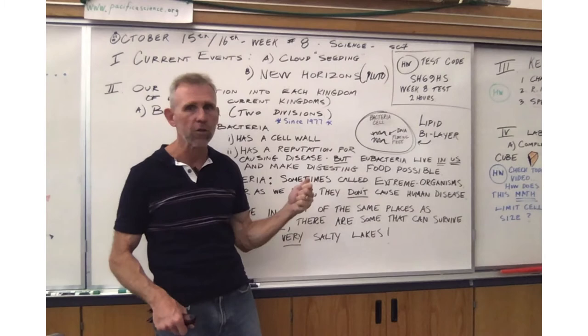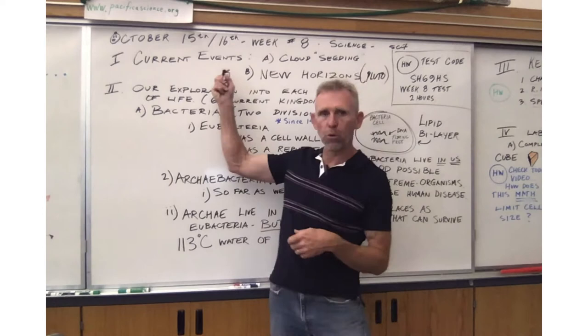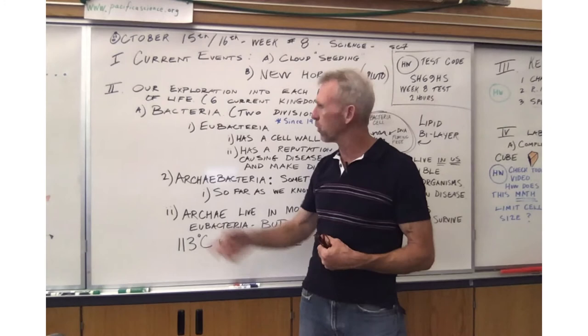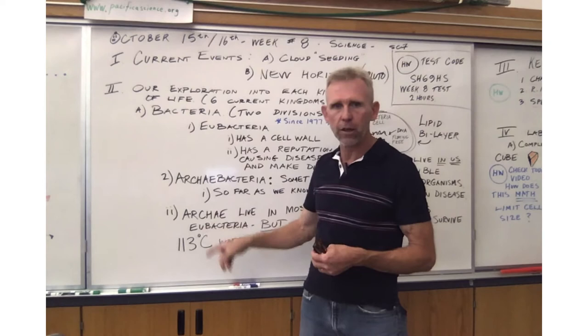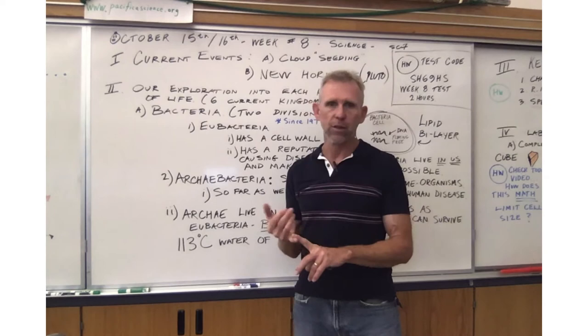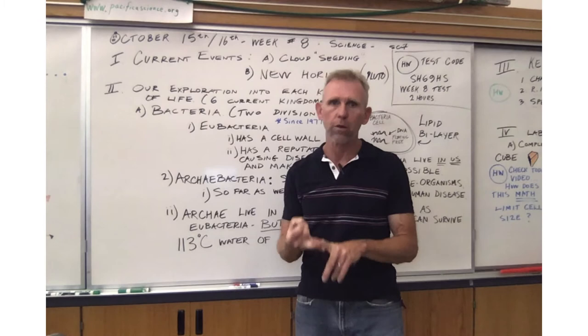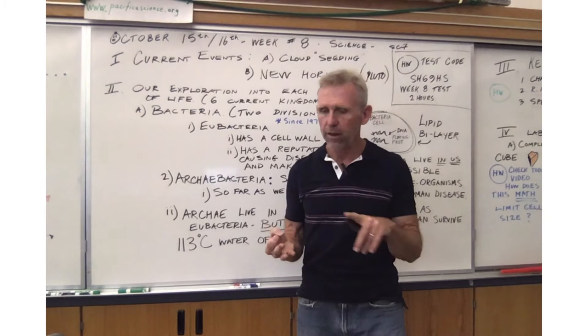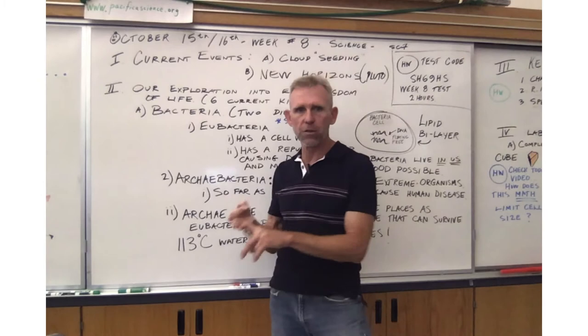So a quick recap is we went through some current events. We did the first two kingdoms that we're going to talk about of the six kingdoms, which is bacteria, recently divided into two kingdoms. You've got eubacteria and archaebacteria. And for the next side, which I'll slide over here in just a second, we're going to talk about a math tie-in and how this math tie-in relates to putting a limit on the size of cells. Remember, if you want to really understand the science, you've got to do the math. Math and science go hand-in-hand. And then the one extra little part, which is how does this math relate to the size of cells?